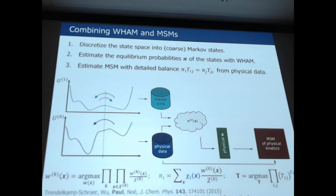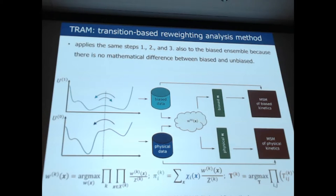Now if you looked at the scheme, we soon realized that this kind of workflow can also be done for the biased data. Nothing prevents us from applying the same mathematics also to the biased simulation and to formulate a Markov model for the biased kinetics, even though it might not be super useful, but we can do it. And this led us to the next thought immediately, which is at the heart of TRAM.